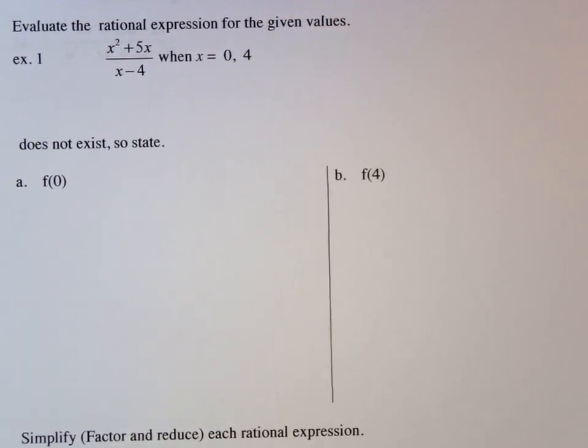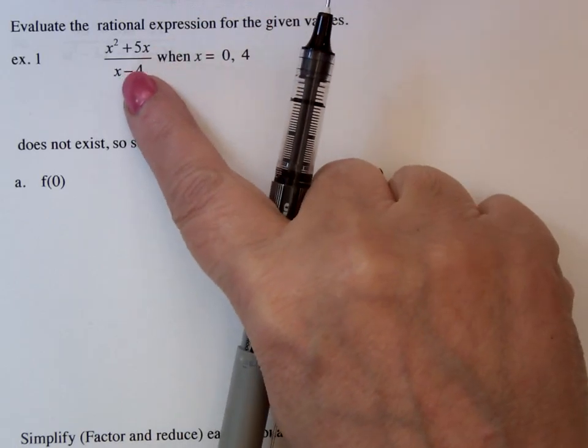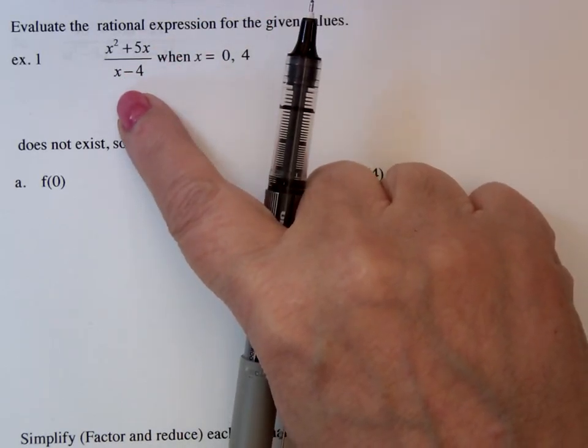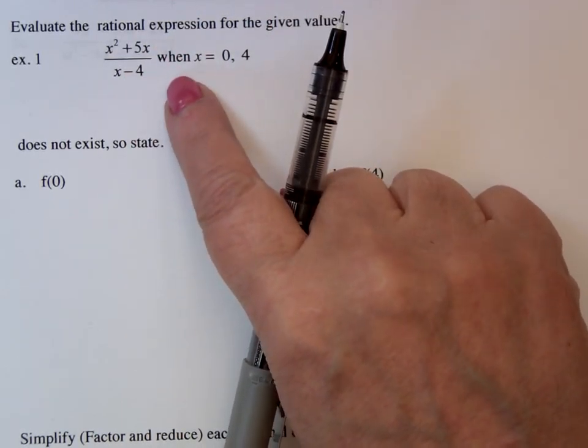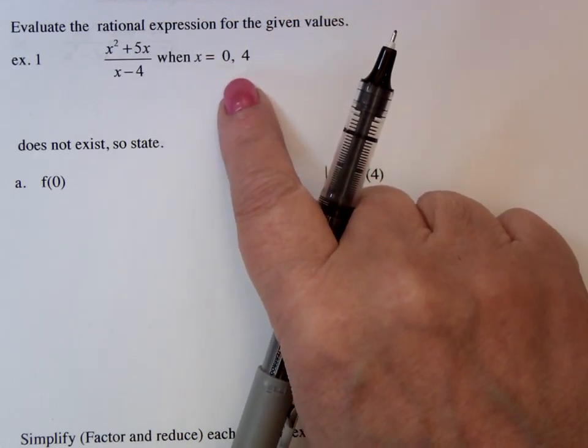So now we want to evaluate the rational expression, namely x squared plus 5x over x minus 4, when x equals 0 and x equals 4.